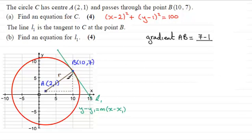And if you work this out, this comes to 6 over 8, 6 eighths, or better still, 3 quarters.